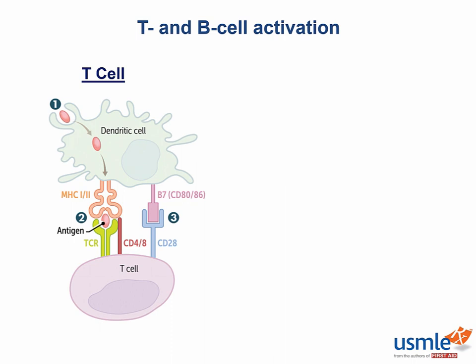Remember that there are two signals required for both B and T cell activation. For T cell activation, a foreign body is phagocytized by the antigen-presenting cell and presented to the T cell via MHC2. This is signal 1.